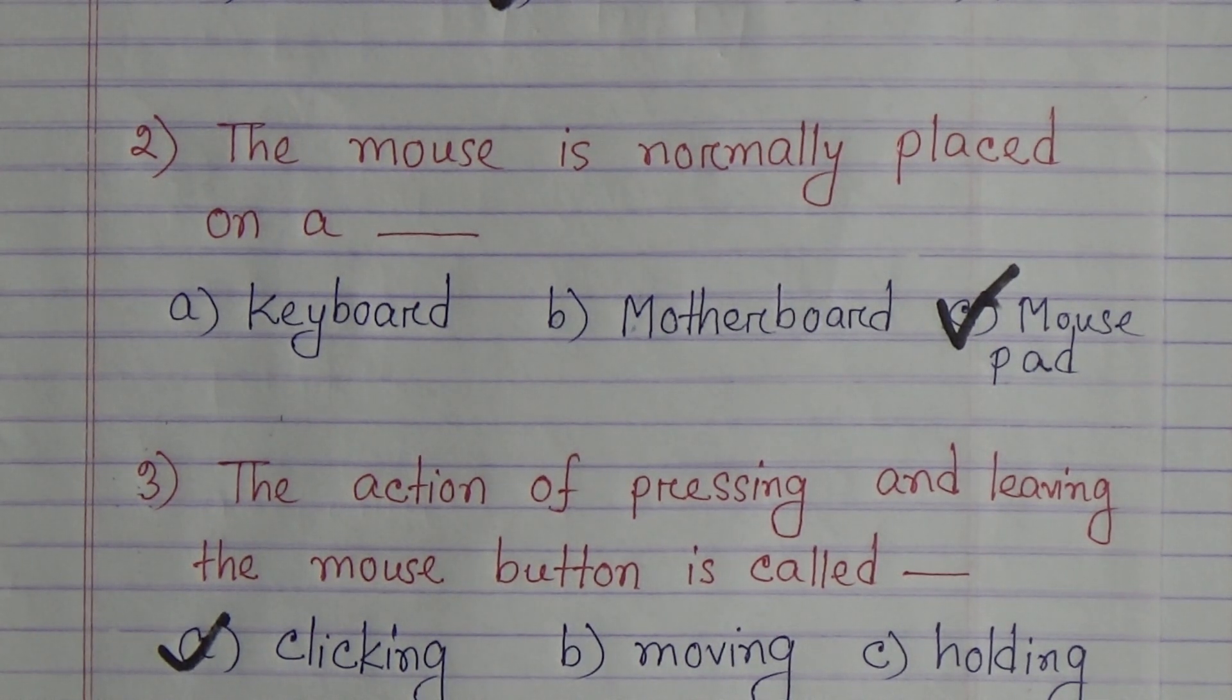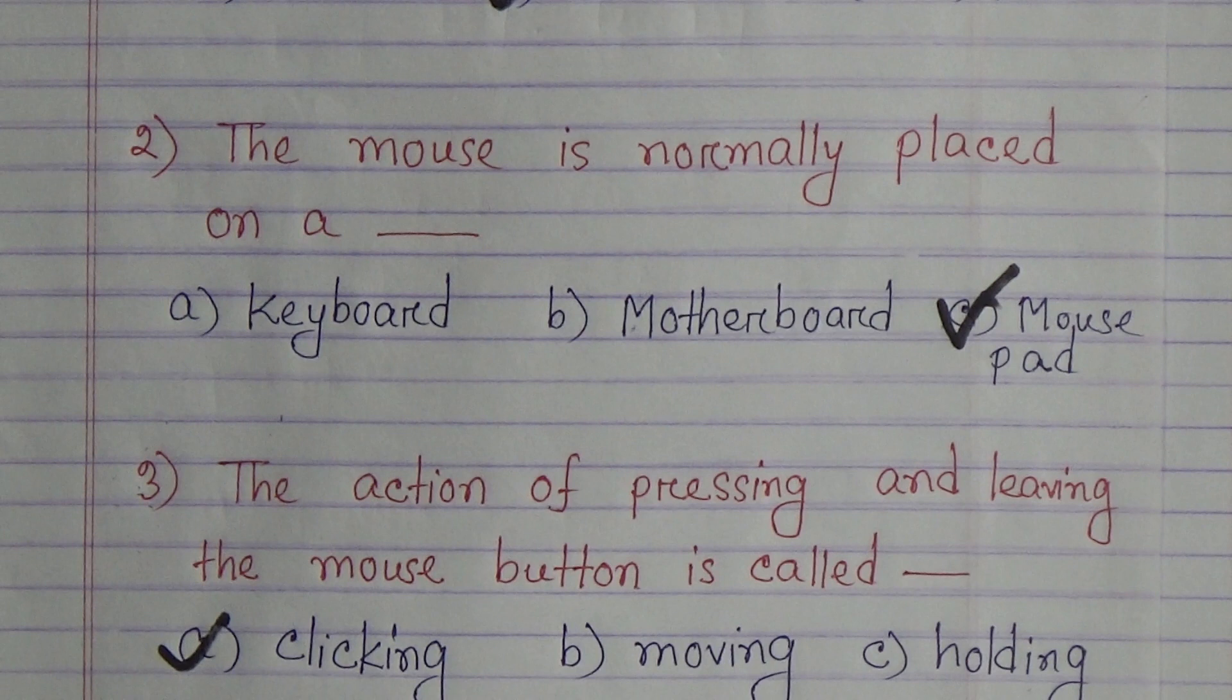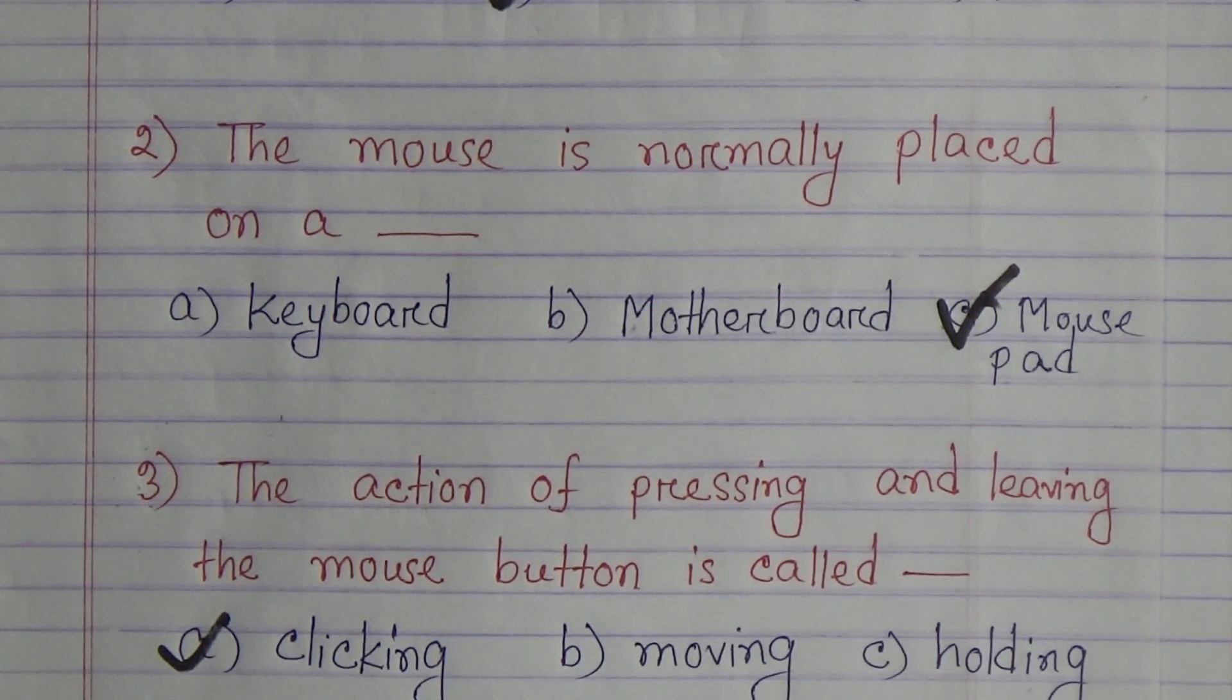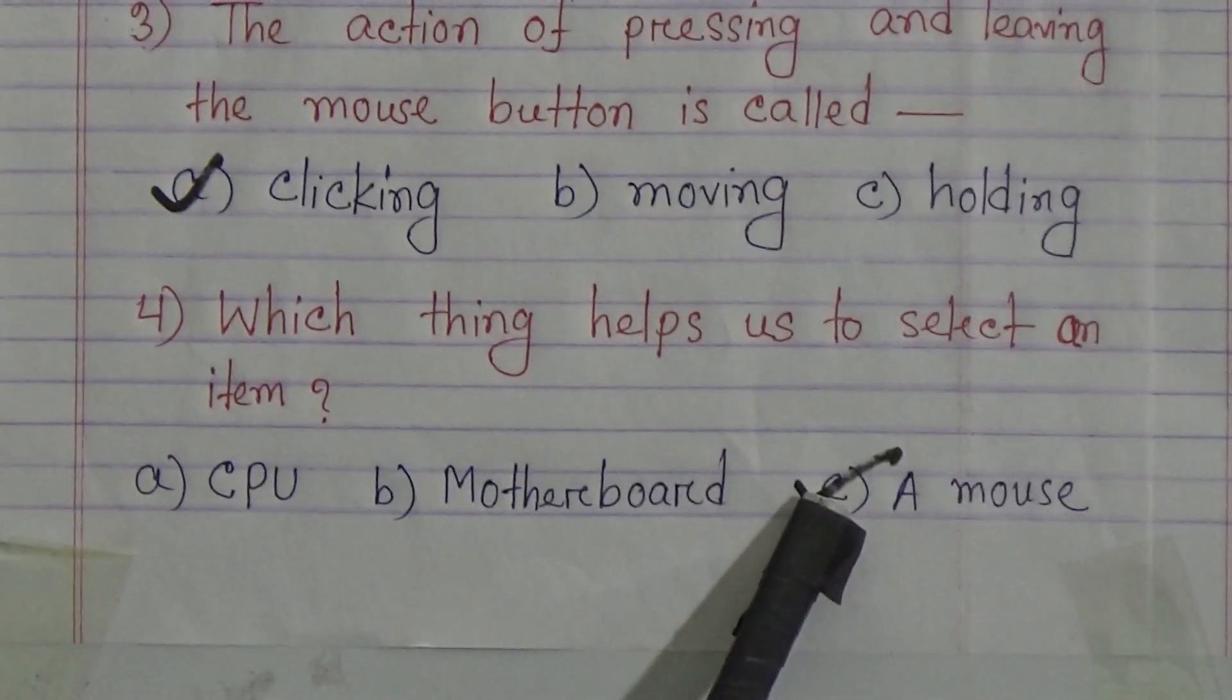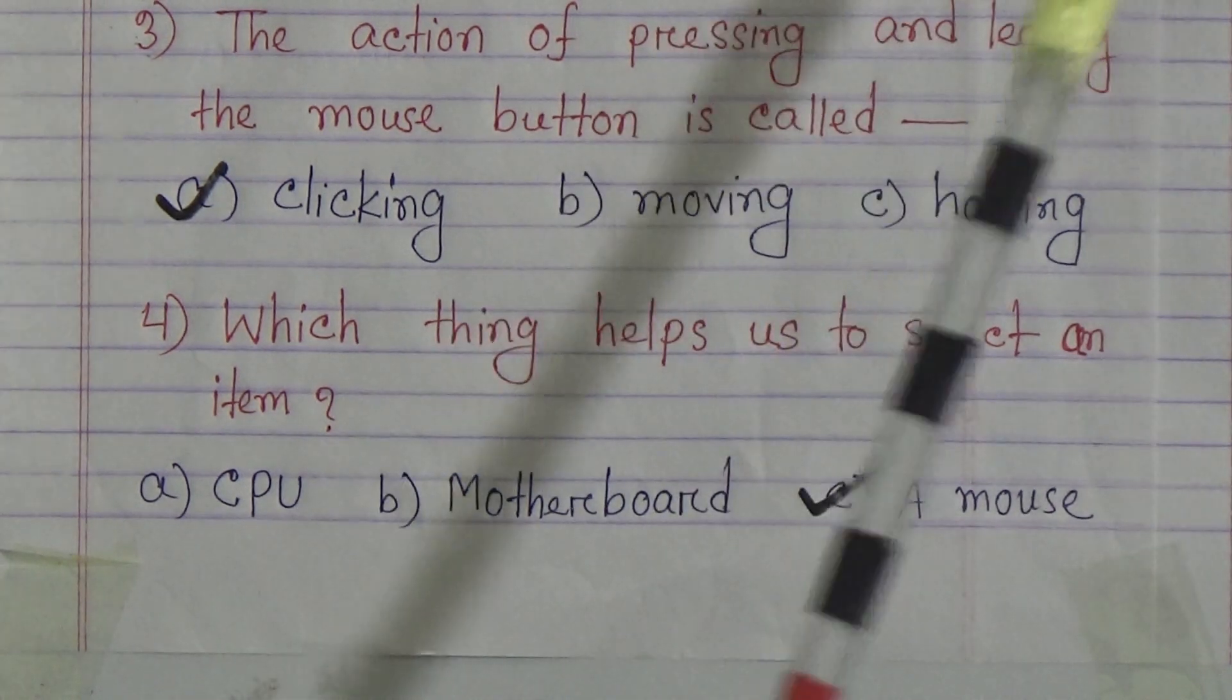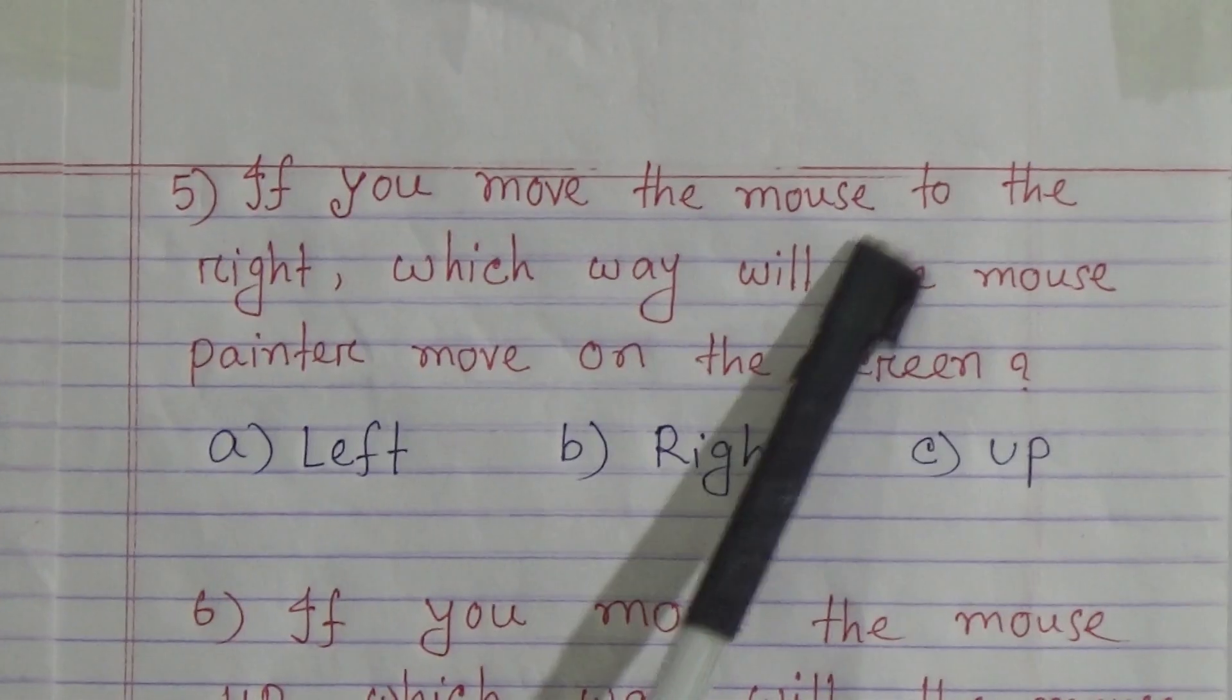Question 4: Which thing helps us to select an item? Option A: CPU, Option B: Motherboard, Option C: Mouse. C is correct - a mouse. Now move on to question number 5.